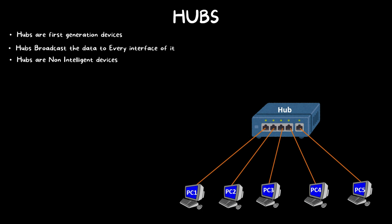Hubs are non-intelligent devices because of their broadcasting characteristic — they send data to all interfaces. This means many devices receive packets not intended for them. This type of data transmission is not secure at all. If a third person wants to know what is inside the data, they can easily decrypt and understand it. The network transmission through a hub is not secure, which is why hubs are called non-intelligent devices.